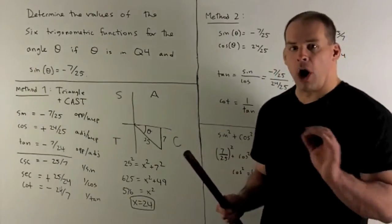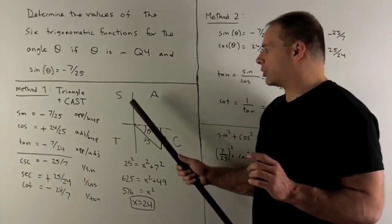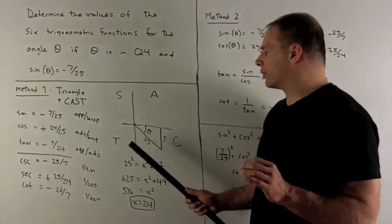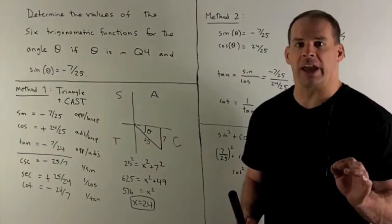Quadrant one, they're all positive. Quadrant two, sine is positive, cosine and tangent are negative. And then quadrant three, tangent is positive, sine and cosine are negative.